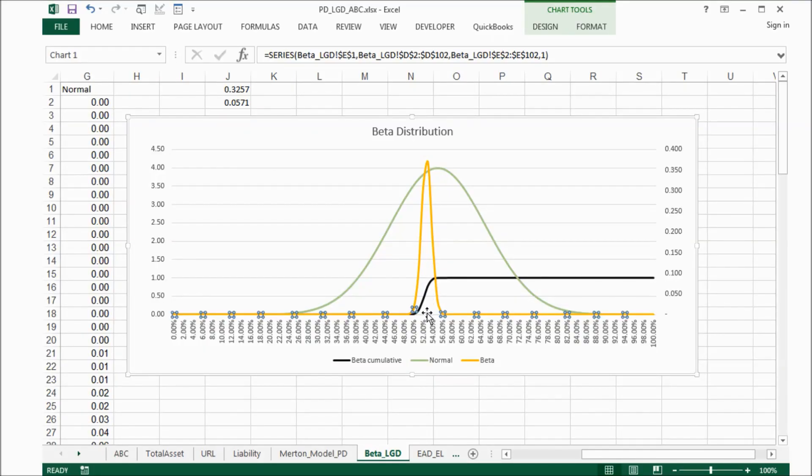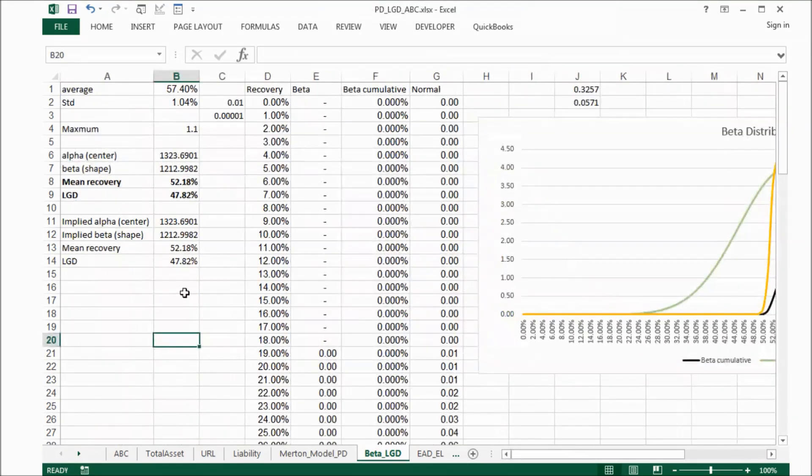It's not like normal distribution, quite broad. The mean recovery is alpha divided by the sum of alpha plus beta, which is 52.18 in this example. And LGD is 1 minus mean recovery, give us 47.82%.